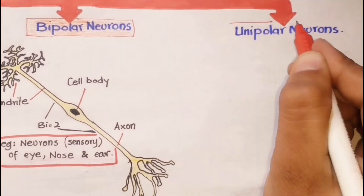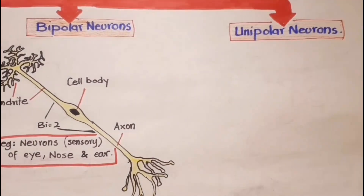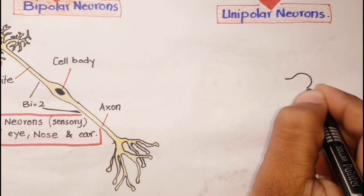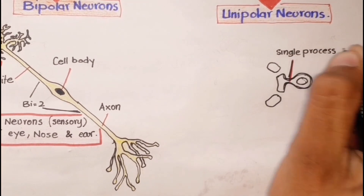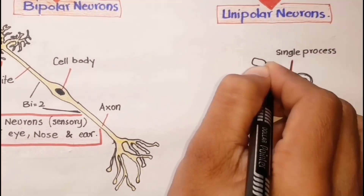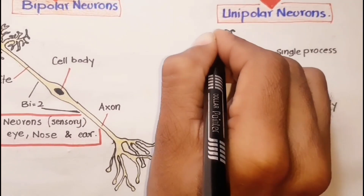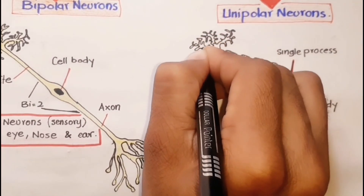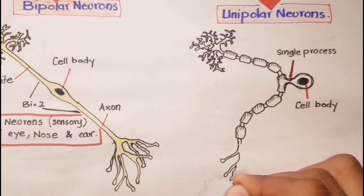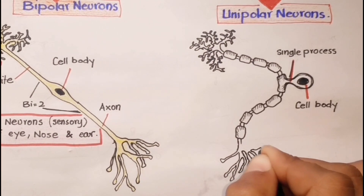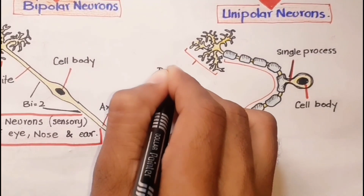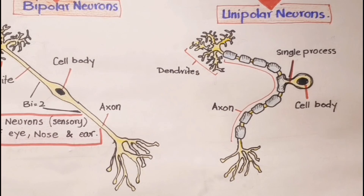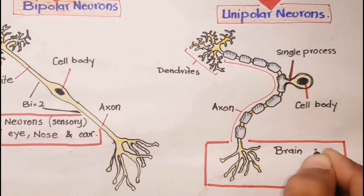The third type on a structural basis is the unipolar neuron. Unipolar neurons have a single process extending from the cell body. A short distance from the cell body, this process divides into two branches, which really function as a single axon — one branch is associated with dendrites near a peripheral body part, and the other branch enters the brain or spinal cord.